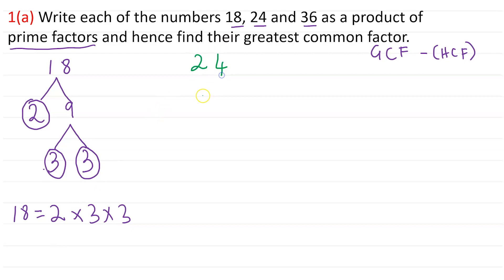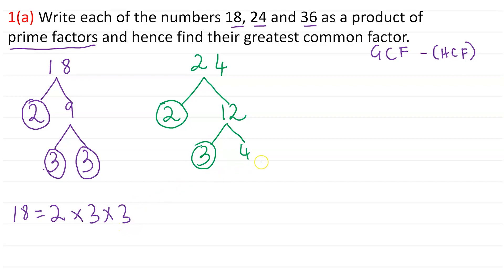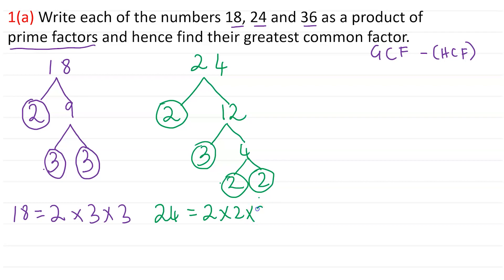Now let's do 24. We can say 24 is 2 times 12. 2 is prime, so we circle it. Then 12 is 3 times 4. 3 is prime, and 4 is 2 times 2 — both prime. So 24 is equal to 2 times 2 times 2 times 3. We can check: 2×2=4, 4×2=8, 8×3=24.